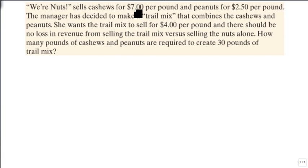So we're going to identify some key things. The cashews are $7 per pound, the peanuts are $2.50 per pound, and we want our trail mix to sell for $4 per pound. The other thing that we know is that we want to create 30 pounds of trail mix.